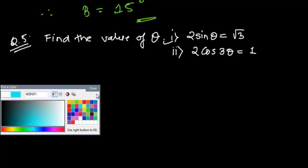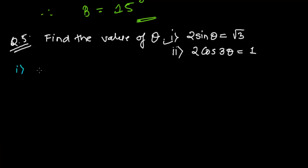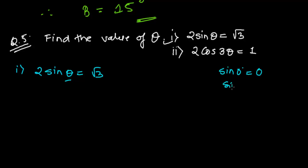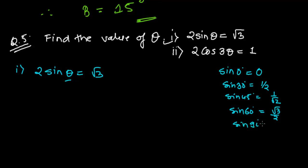So what is given here: 2 sin theta equals root 3. Since it is a sine-related problem, let me recall the trigonometric values from the sine table. We know that sin 0° = 0, sin 30° = 1/2, sin 45° = 1/√2, sin 60° = √3/2, and sin 90° = 1. We must know all of these before proceeding.